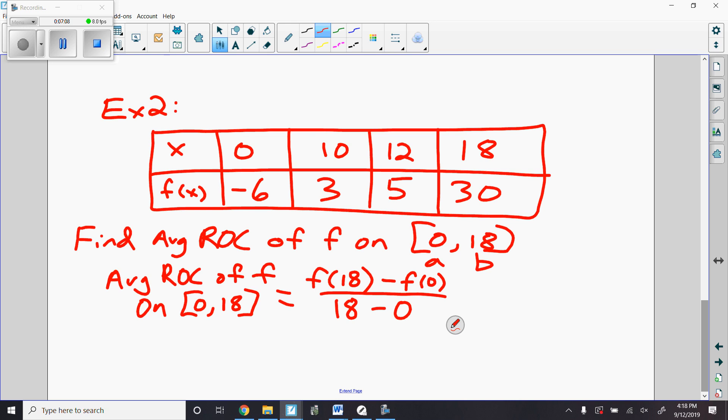Well, f of 18, I can read the table here. f(18) is 30. Minus f(0), f(0) is negative 6. So it's 30 minus negative 6, so I'm going to actually add them there, over 18 minus 0, which is 18. I get 36 over 18, which equals 2. So my average rate of change is 2. I don't even have to know what else is going on in the middle there. I know my average rate of change of f on the interval [0,18] equals 2.